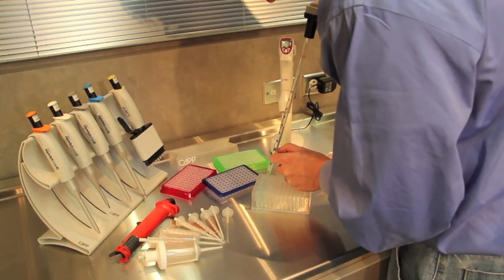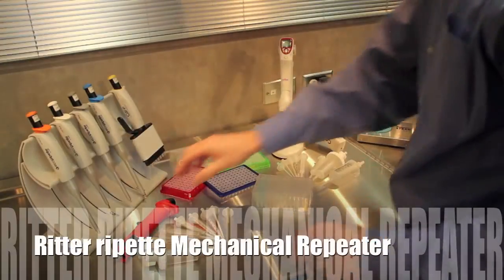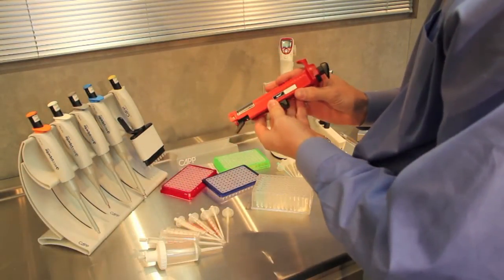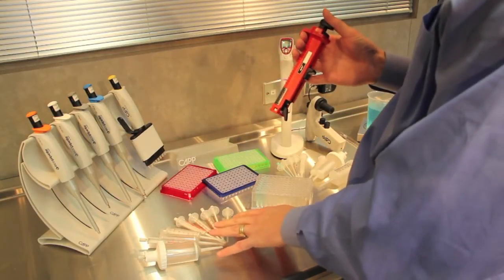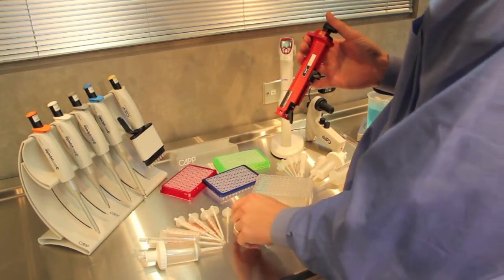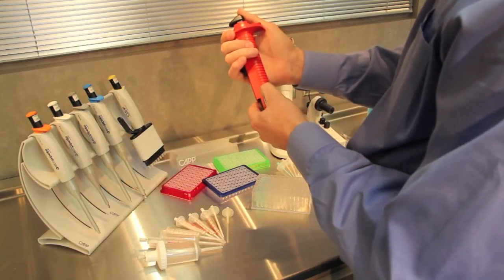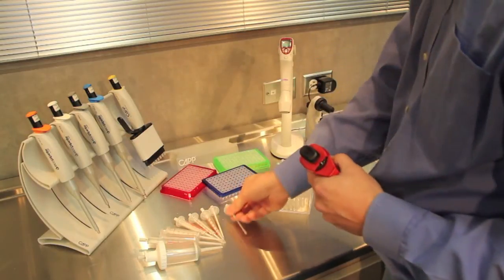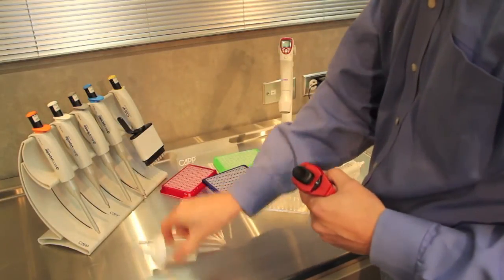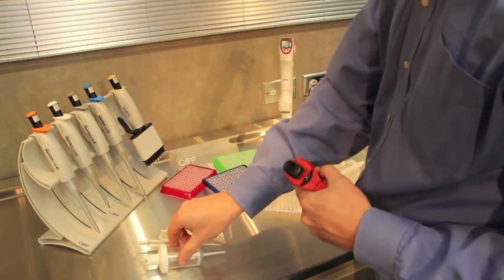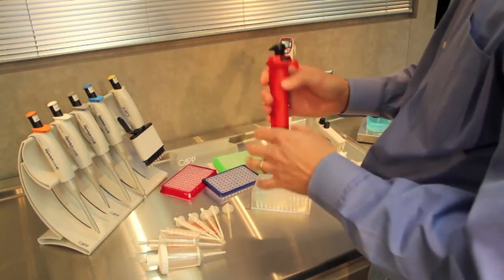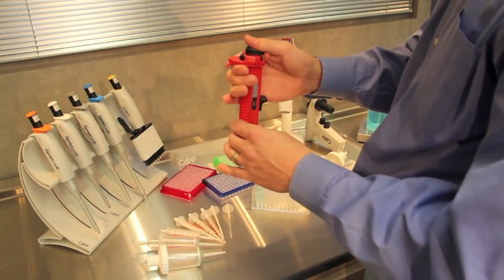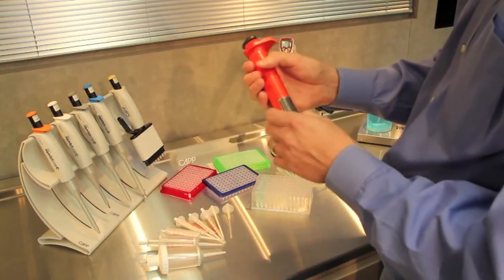The next option is going to be the Ritter Repette mechanical repeater. These work by selecting a syringe size - they go from a 0.05ml syringe, which is this little guy, up to a 50ml syringe. By selecting the syringe size and by selecting how far the plunger moves when you press this button, you can get a variety of volumes dispensed.